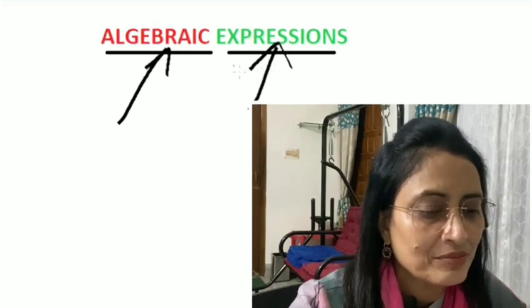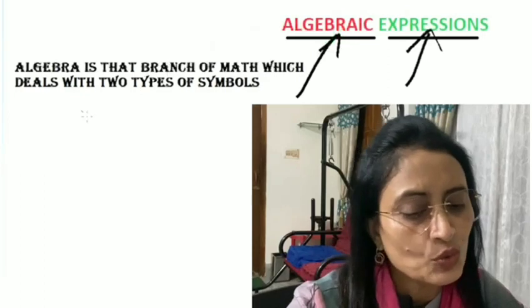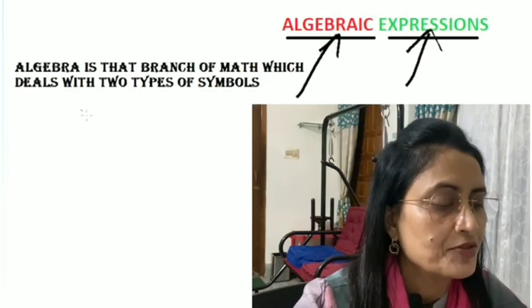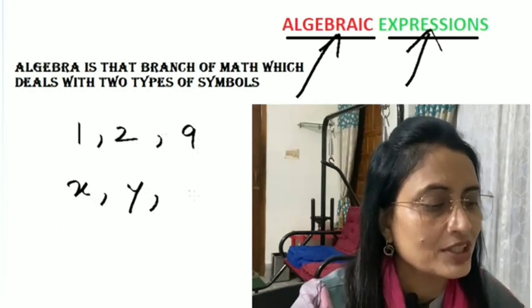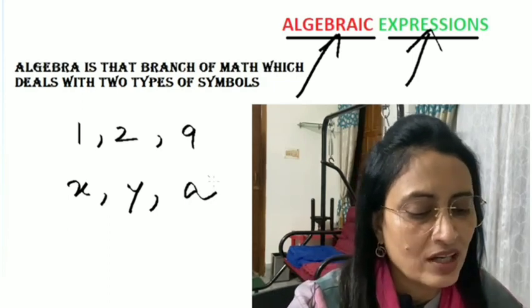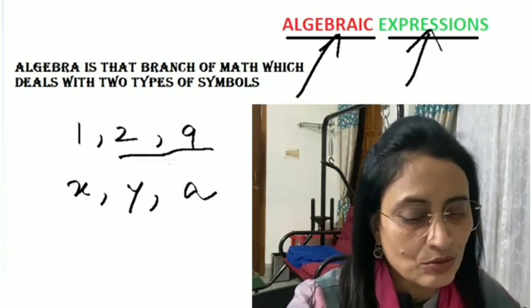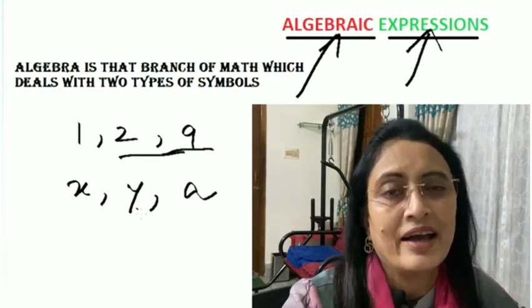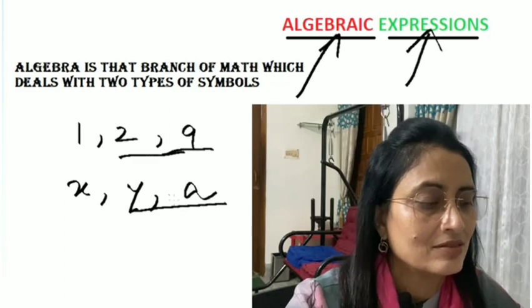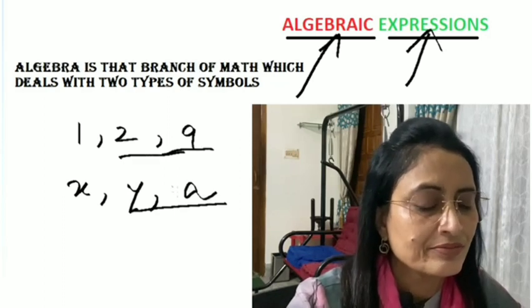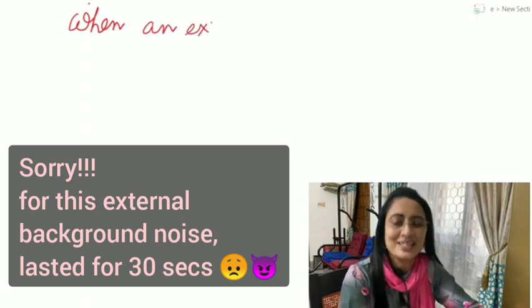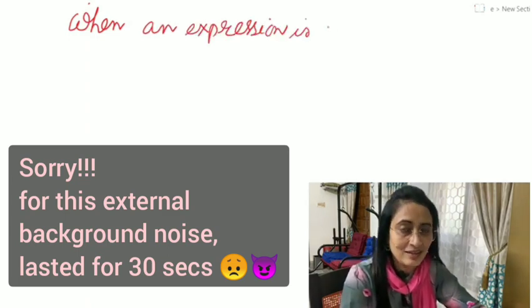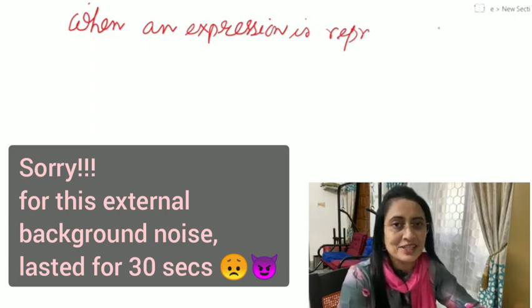Algebra is that branch of math which deals with two types of symbols. One is 1, 2, 9, etc., or any other alphabets which we usually use in algebra as a variable. So these two types of symbols are used. Next is expression. Expression means to express something, and when we express it in an algebraic way, then this is called an algebraic expression.